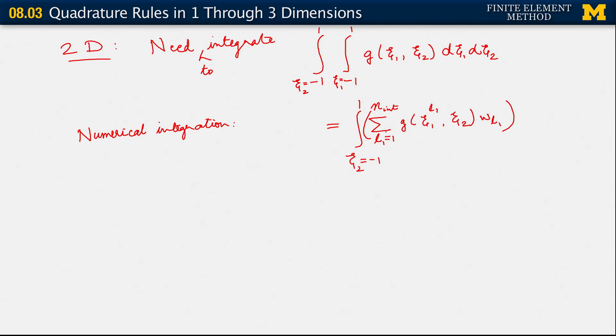So what I have here in parentheses is the result of having integrated over ξ1. We did numerical integration over ξ1, but nevertheless, there we have it, dξ2. And then we come back and do the same thing over ξ2. Numerical integration would give us this. And then as another step, we would get now sum l2 equals 1 to n_int. Sum l1 equals 1 to n_int, g ξ1,l1, ξ2,l2, wl2, wl1, wl2, and we're done.